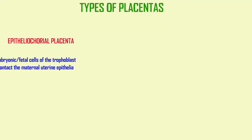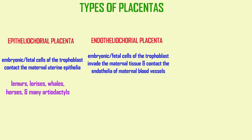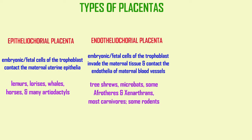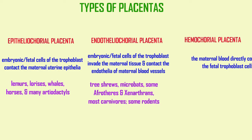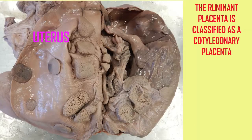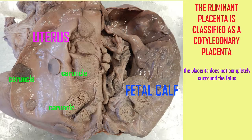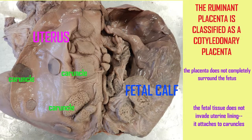The placentas of eutherian mammals can be further subdivided based on whether the cells of the fetal trophoblast contact maternal epithelia, endothelia, or blood, and also whether the cells of the fetus simply attach to the endometrium or invade the endometrium so that the endometrium grows around them.